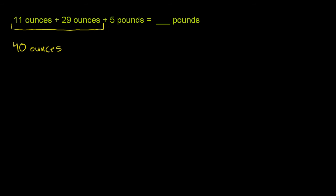So we need to add 40 ounces to 5 pounds to get a certain number of pounds. So let's convert this to pounds, and then once we have that in pounds, we can just add it to that and get our final answer.